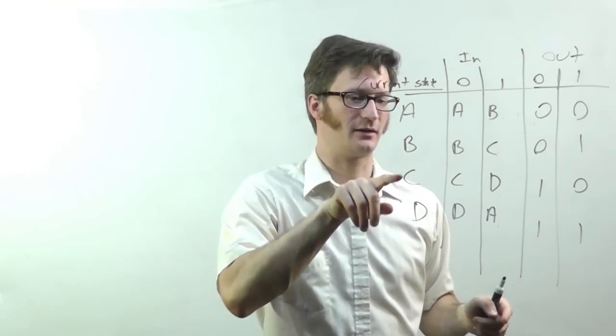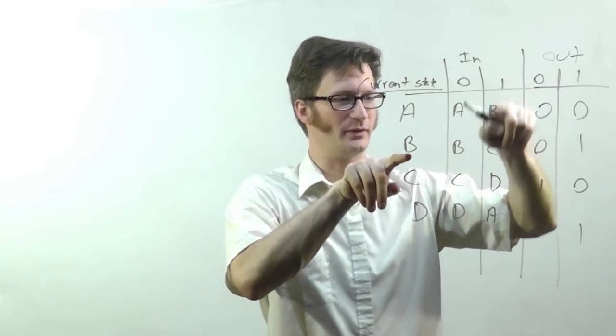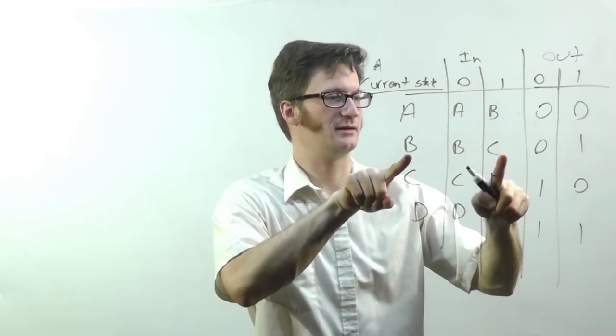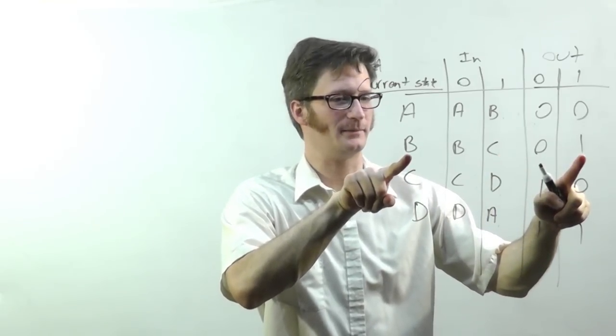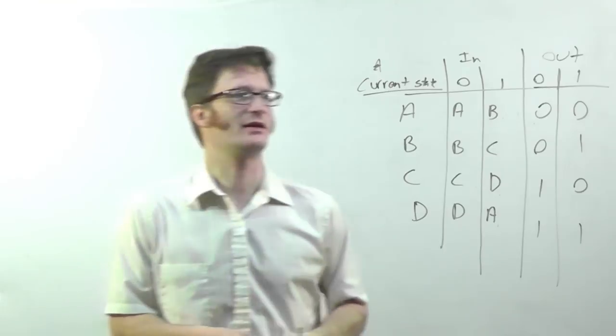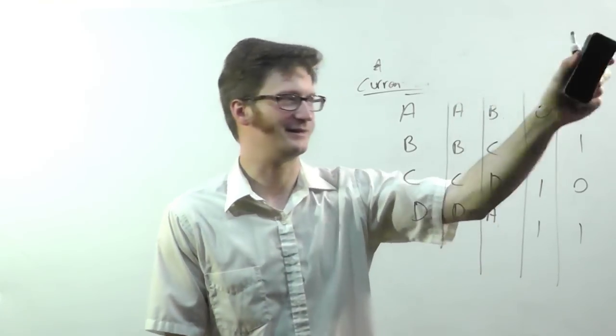If my current state is B and my input is one, when the clock pulse comes, I'll be going into state C. But, until then, my output will be one. So there you go. That's Mealy state diagrams, state tables.